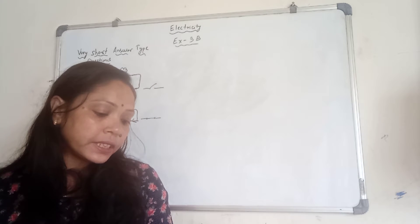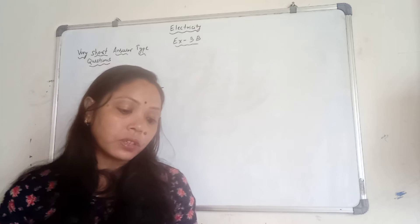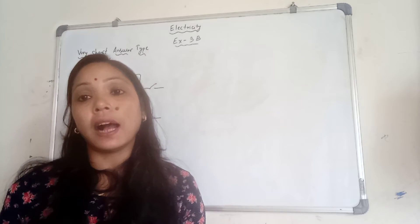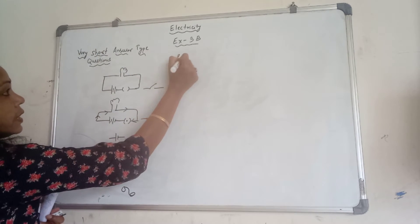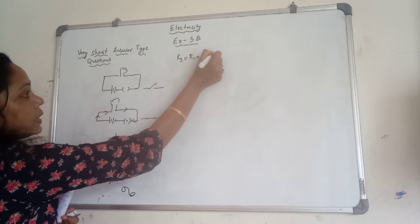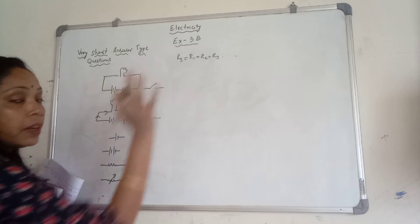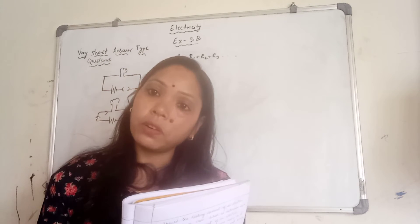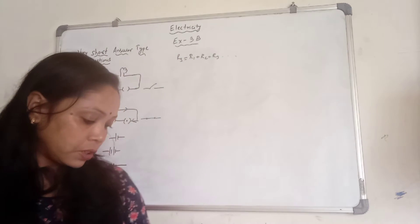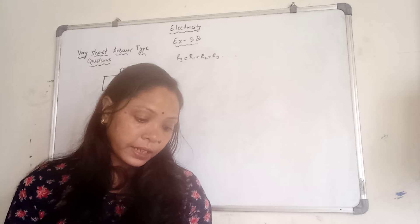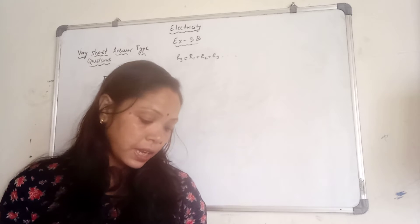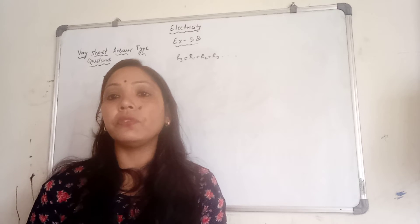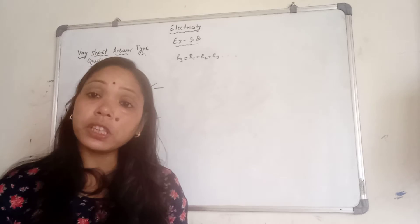In series circuit, overall resistance is blank than the resistance of the individual resistance. In series connection, we always get more resistance because RS is equal to R1 plus R2 plus R3 and so on. Whenever we add, we always get the quantity more. Whenever we divide, then it always gets the quantity less. So, first one will be more than the resistance of the individual resistance. And in a parallel circuit, overall resistance is less than resistance of the individual resistors.